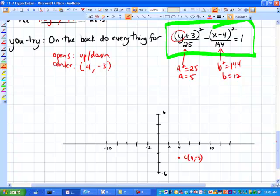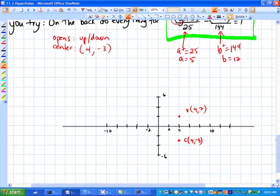Now since the 5 is underneath the y coordinate or the y part of this, that tells me I'm going to count up 5 units. So that will put me right about here for one of my vertexes. That will be 4, positive 2. And I'm going to count 5 units down this direction. So that would put me at 4, negative 8 for another vertex.